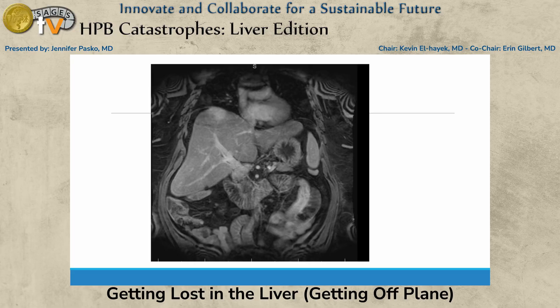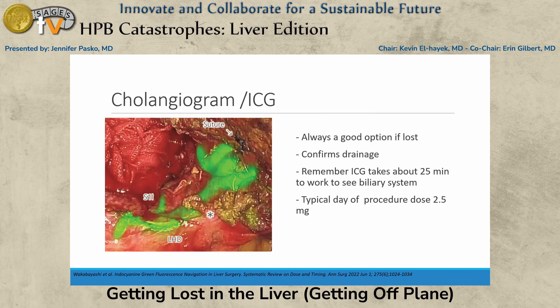Parenchymal sparing resections are extremely difficult because they require 3D spatial reasoning and you may not see the lesion on the periphery or have surface anatomy to guide you. This is a patient I did about a month ago — you can see how blunted her liver edges are, a very steatotic liver, and it's a four-centimeter lesion. I can see it on the surface, but that's a big chunk of liver to come through. Knowing what you're getting yourself into is very important.